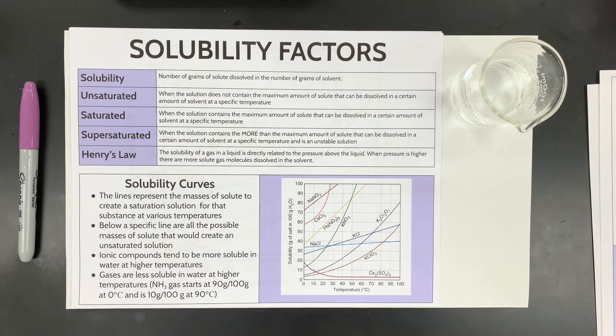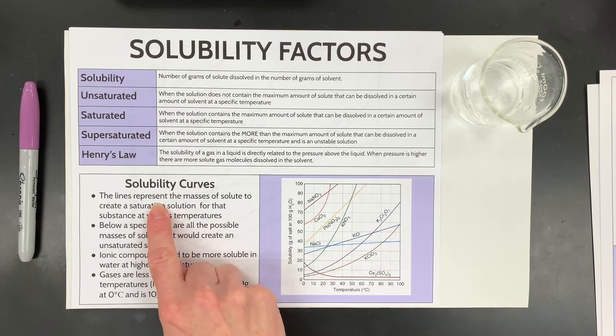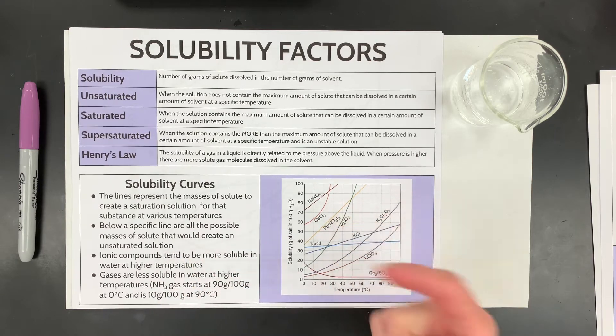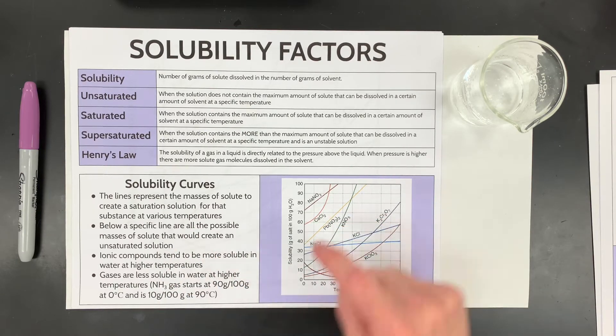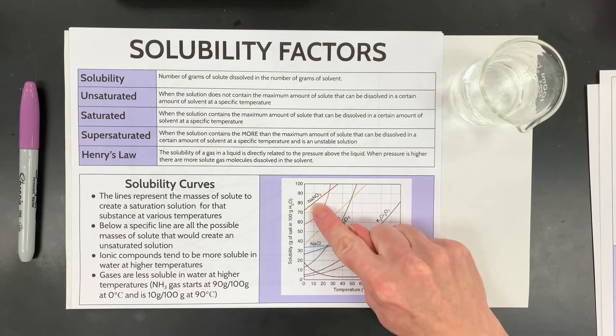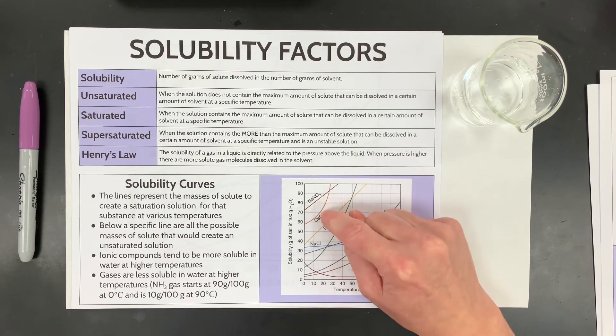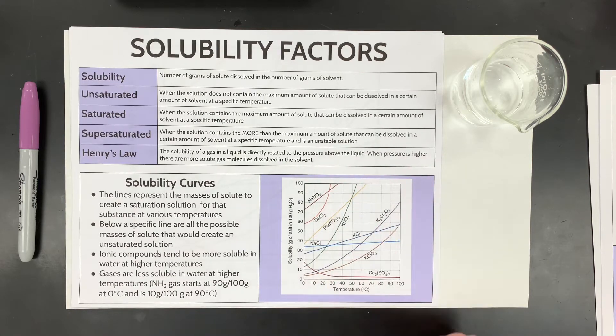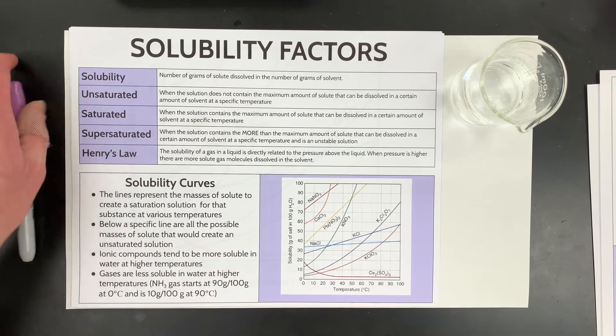All right, first off, the lines represent the mass of the solute we can dissolve, which I went over already. Below that line it's where you can say it's unsaturated. Remember you'll get each specific line, so if it was sodium nitrate, that's the line. It's saturated, below it is unsaturated, above it would be supersaturated if you could make it. Ionic compounds tend to be more soluble at higher temperatures and then gases are less soluble.